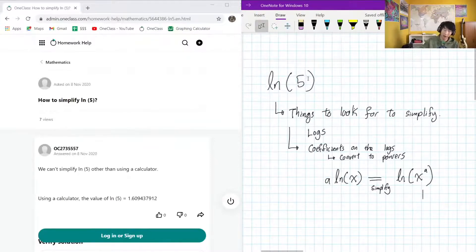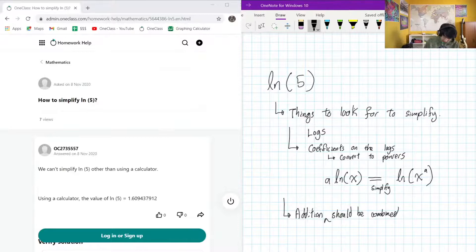But clearly that does not apply here. If we have a coefficient of one and five to the power of one is one, so not particularly useful for this case. Another thing that we want to do is addition of logs should be combined.